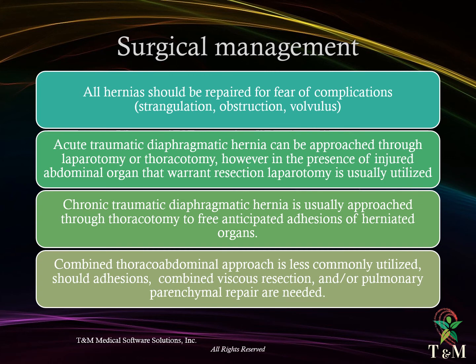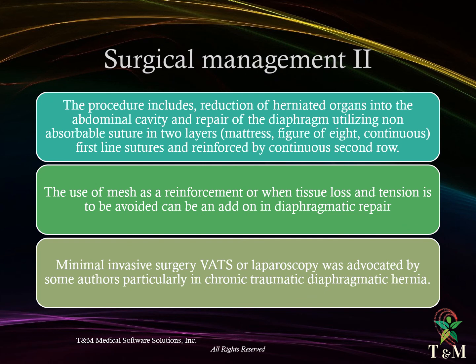Surgical management: all hernias should be repaired for fear of complications such as obstruction, strangulation, and volvulus. Acute traumatic diaphragmatic hernia can be approached through laparotomy or thoracotomy; however, in the presence of injured abdominal organs that warrant resection, laparotomy is usually utilized. Chronic traumatic diaphragmatic hernia is usually approached through thoracotomy to free anticipated adhesions of herniated organs. A combined thoraco-abdominal approach is less commonly utilized when adhesions, combined visceral resection, and/or pulmonary parenchymal repair are needed. The procedure includes reduction of herniated organs into the abdominal cavity and repair of the diaphragm utilizing non-absorbable sutures in layers; first-line sutures are reinforced by a continuous second row. Mesh reinforcement can be added when tissue loss is present and tension is to be avoided. Minimally invasive surgery such as video-assisted thoracoscopy or laparoscopy has been advocated by some authors, particularly in chronic traumatic diaphragmatic hernia.